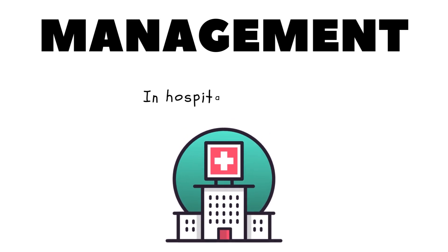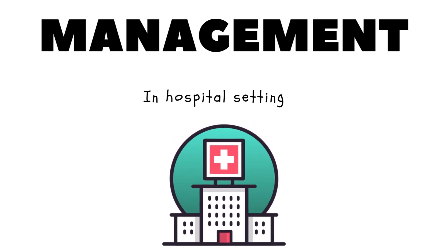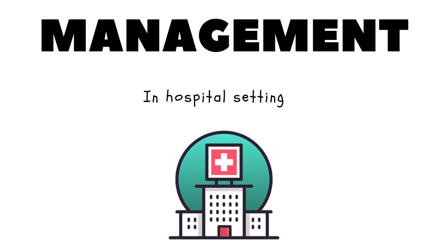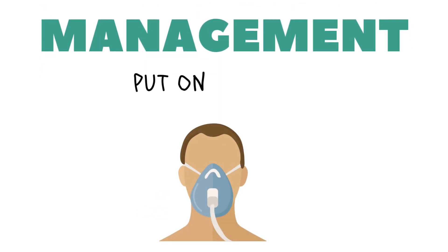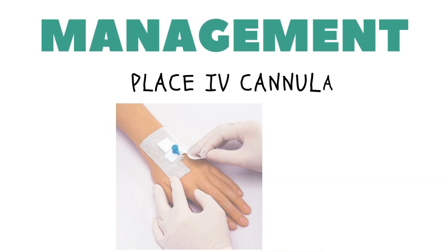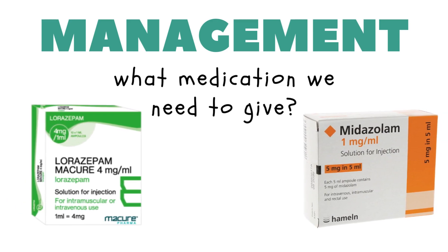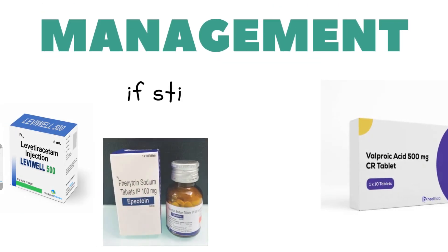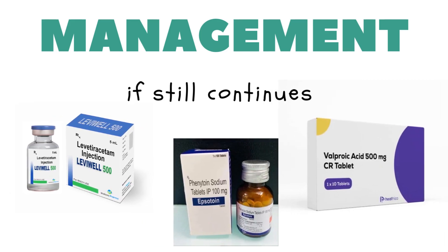As a healthcare professional managing seizures in hospital, follow the same steps until the seizure stops, observe the timing to confirm the type, and monitor behavior during the seizure. Once it is over, perform an A-to-E assessment, administer oxygen if needed, place the patient in the recovery position, connect to a monitor, check blood glucose, and place an IV for medication. First-line management involves lorazepam IV and midazolam IM. If seizure continues, use levetiracetam (Keppra), phenytoin, and valproic acid.